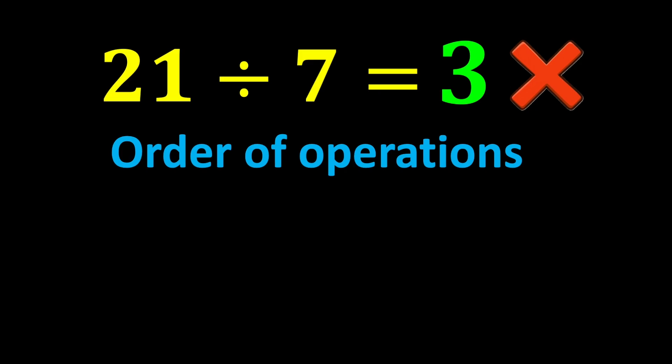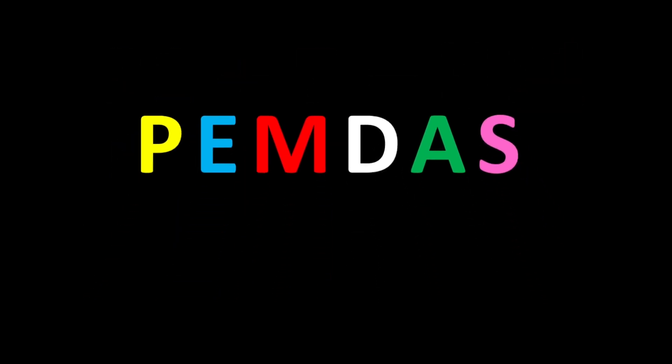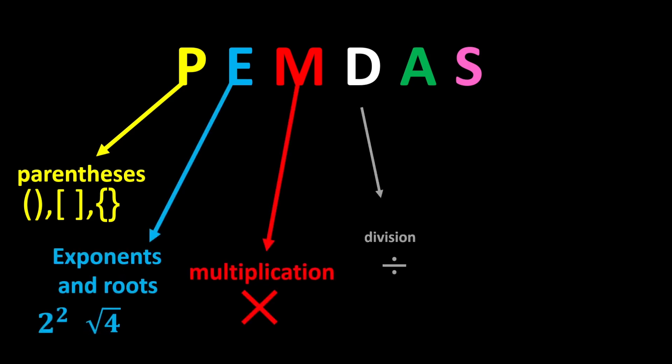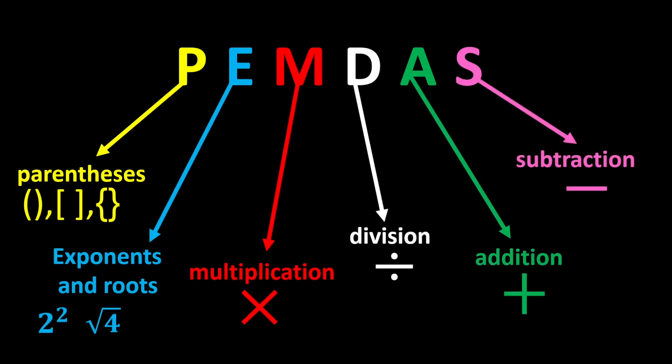The correct order of operations is known by a short acronym called PEMDAS. According to PEMDAS, in any mathematical expression, we first calculate parentheses, then exponents and roots, then multiplication and division, and finally addition and subtraction. Remember that multiplication and division have equal priority. In any expression that has both multiplication and division, we move from left to right and perform whichever we reach first. This rule also applies to addition and subtraction.